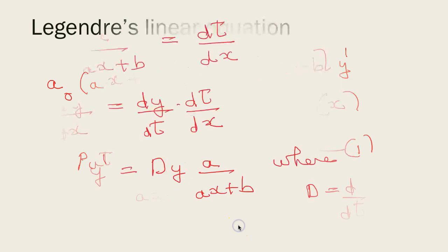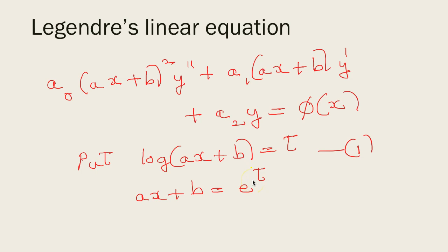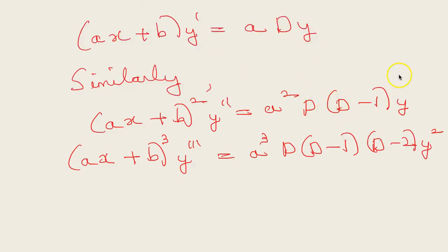Taking the derivative with respect to x, we get a/(ax + b) = dt/dx, because the derivative of log(ax + b) is 1/(ax + b) times a. So dy/dx using the chain rule is dy/dt × dt/dx. Thus y' = dy × (a/(ax + b)), and cross multiplying gives (ax + b)y' = aDy, where D denotes d/dt.